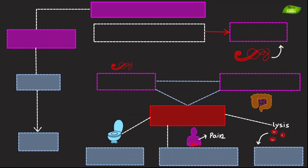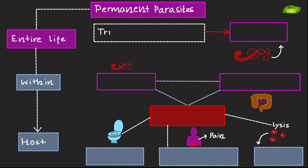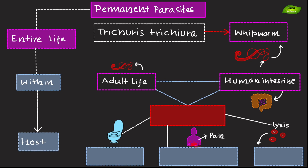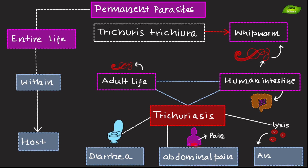Permanent parasites spend their entire life on or within the host. An example is Trichuris trichiura, the whipworm, which lives its entire adult life in the human intestine, causing trichuriasis. This can lead to symptoms like diarrhea, abdominal pain, and anemia.